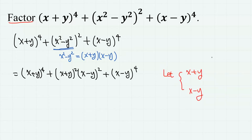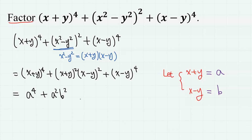So now the expression contains only (x plus y) and (x minus y). For a simpler expression, let us make a substitution. Let x plus y equal a and x minus y equal b. Then this expression becomes a to the power of 4 plus a squared b squared plus b to the power of 4.